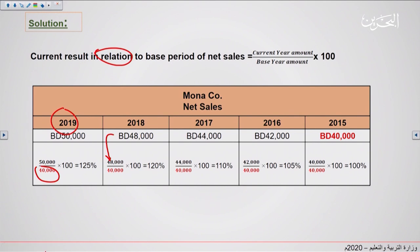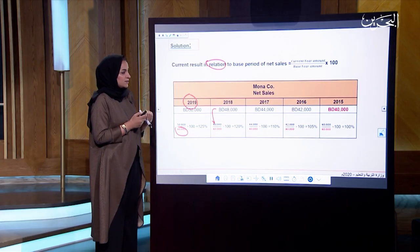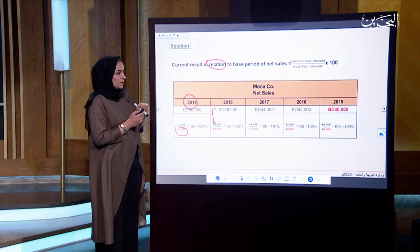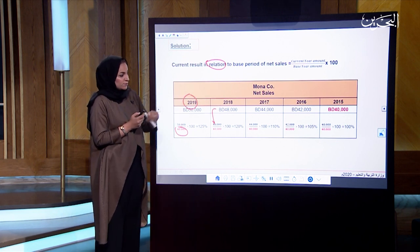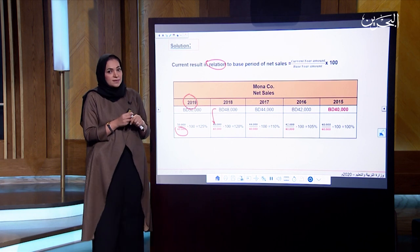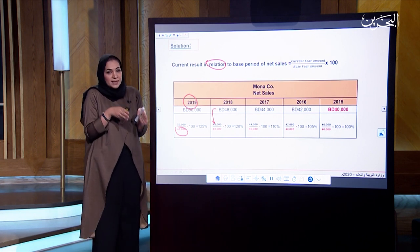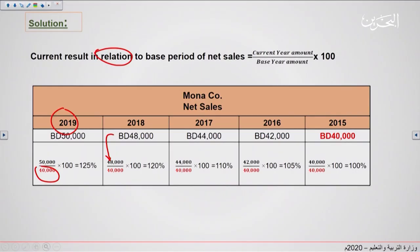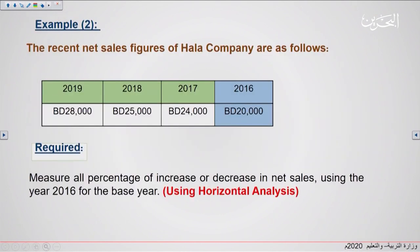The same calculation applies for 2017 and 2016. For 2015, the base year, the result is 100% because the current year amount equals the base year amount: 40,000 divided by 40,000 multiplied by 100 equals 100%.